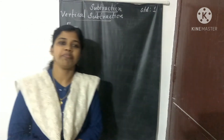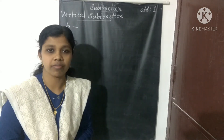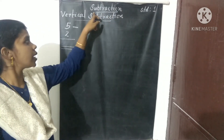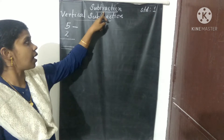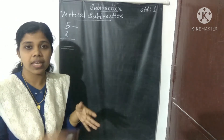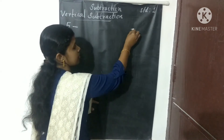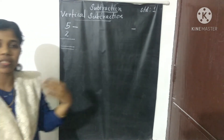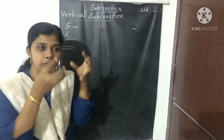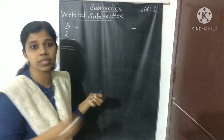Hi dear children, good morning. Today we have to study vertical subtraction. What is the spelling of subtraction? S-U-B-T-R-A-C-T-I-O-N. Now the symbol for subtraction is minus. Subtraction means taken away.